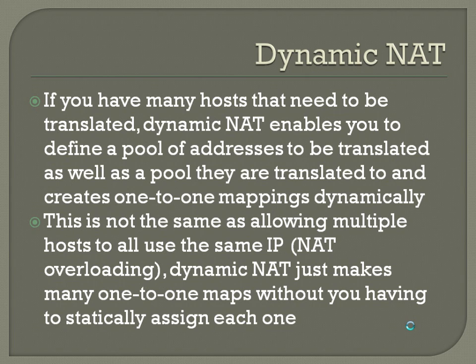If you have many hosts that need to be translated, dynamic NAT enables you to define a pool of addresses to be translated as well as a pool that they are translated to, and it creates one-to-one mappings dynamically. This is not the same as NAT overloading, which allows multiple hosts to all use the same IP. Dynamic NAT just makes many one-to-one maps without you having to statically assign each one — useful when you have large pools of public and private IPs that you want mapped automatically as needed.